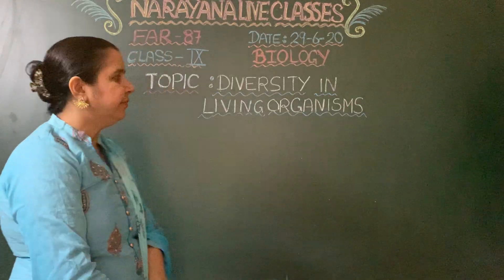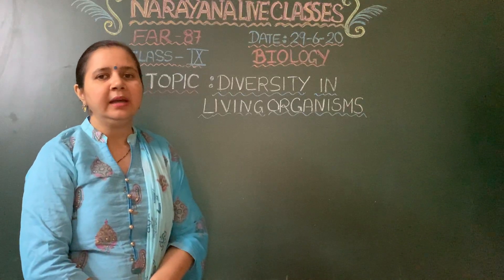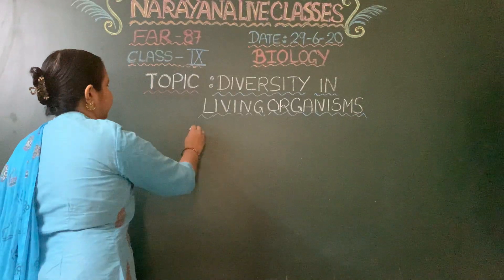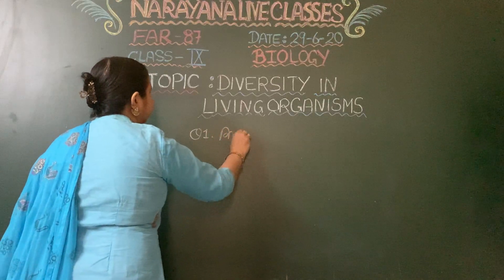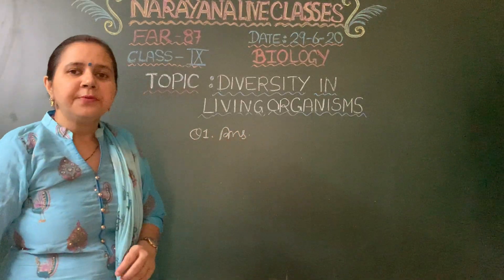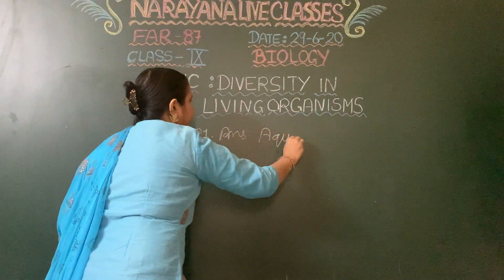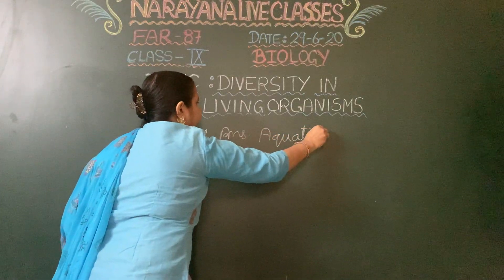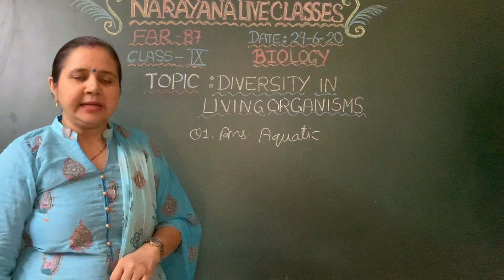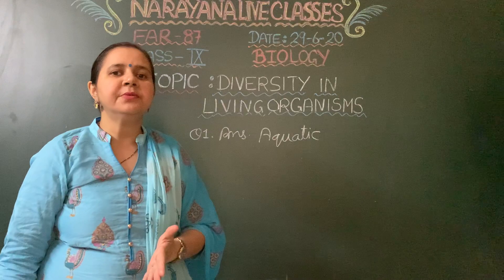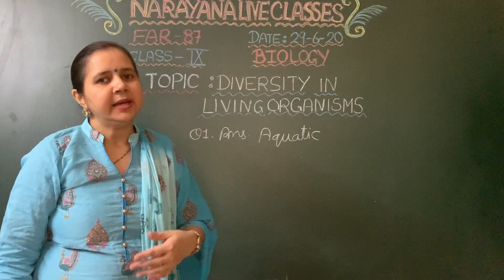Question number 1 asks that Pisces are exclusively dash. Pisces include fishes, so they are exclusively aquatic animals. They cannot live without water for even a second, so organisms which always live in water are termed as aquatic.